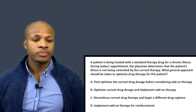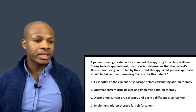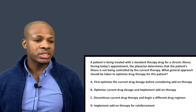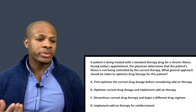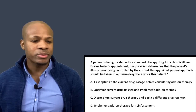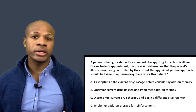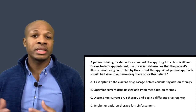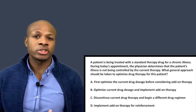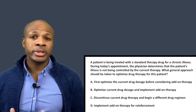Question number one: a patient is being treated with a standard therapy drug for a chronic illness. During today's appointment the physician determines that the patient's illness is not being controlled by the current therapy. What general approach should be taken to optimize drug therapy for this patient? This is a classic type of question — a patient is taking a certain drug for a certain disease and the drug is not fully controlling the disease. So as a pharmacist, what do we do?